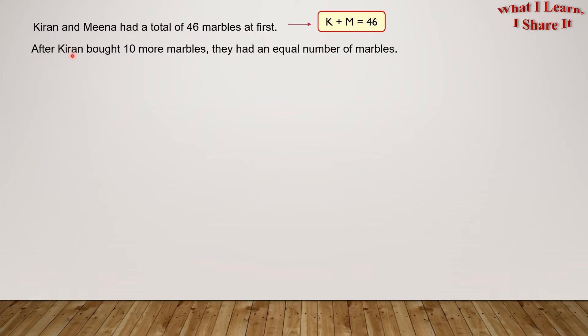After Karen bought 10 more marbles, they had an equal number of marbles. What this means is, if we add 10 marbles to Karen's marbles, we will get Mina's marbles. This in turn means that we can use K plus 10 instead of M.